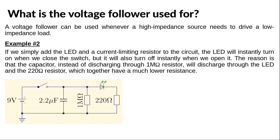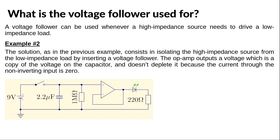But if we connect this circuit to an LED and a 220 Ω resistor, we don't observe the expected behavior. The LED will certainly instantly turn on when we close the switch, but it will also almost instantly turn off when we open it. The reason is that now the capacitor no longer discharges through the 1 MΩ resistor — instead, it discharges through the LED and the 220 Ω resistor, which together have a much lower resistance. The solution, as in the first example, is to insert a voltage follower between the output of the capacitor and the LED. The op-amp does not deplete the capacitor's charge because the input impedance of its input is infinite.